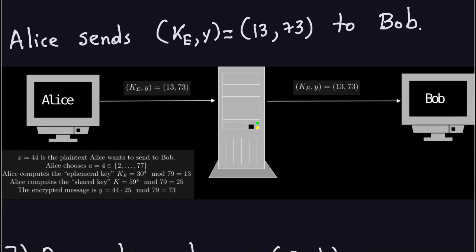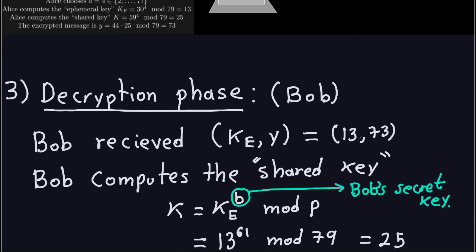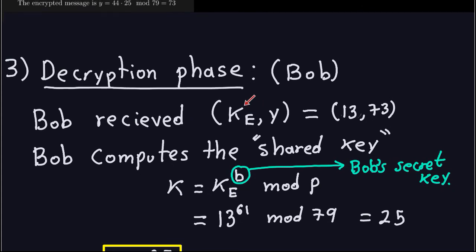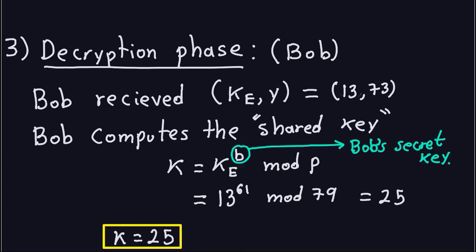Now Bob has to decrypt that pair of numbers. This is the decryption phase, done by Bob. He receives the ephemeral key and the ciphertext — (13, 73). He computes the shared key by raising the ephemeral key to his secret key B modulo P: 13^61 mod 79, which gives 25. That's the shared key — the same value Alice computed.